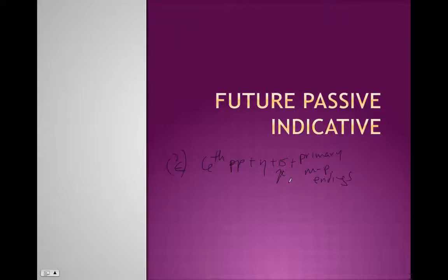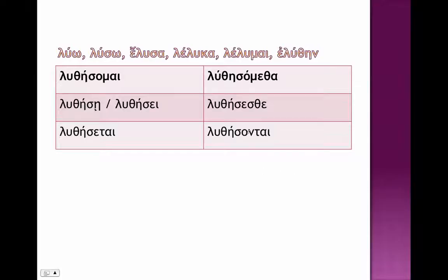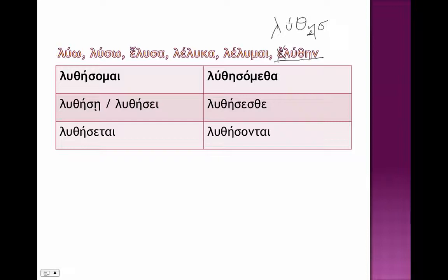This seems very complicated, but it's not. We'll take a look at one particular verb to show you how it works. So, Luo — we're going to start with our sixth principal part, and we're going to take off the epsilon augment. Our stem then is going to be 'luth.' We're going to add an eta, add the sigma — so this is basically our theme vowel, our sigma tense marker — and then we're going to add our endings.